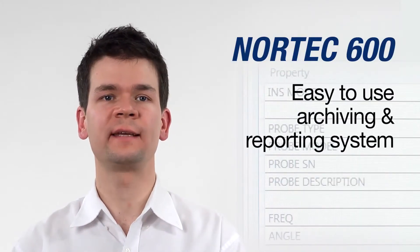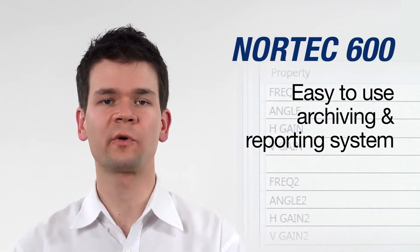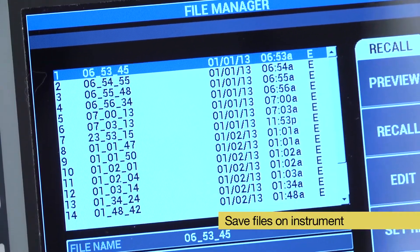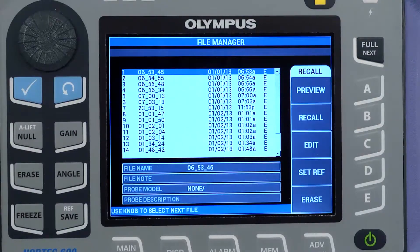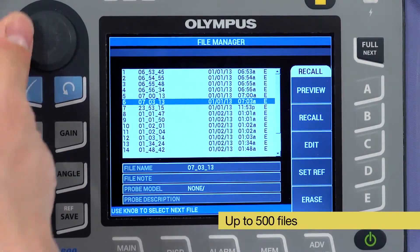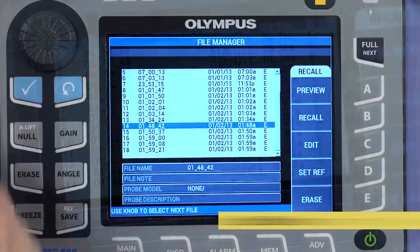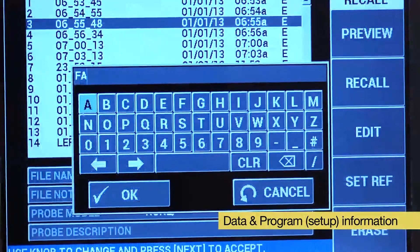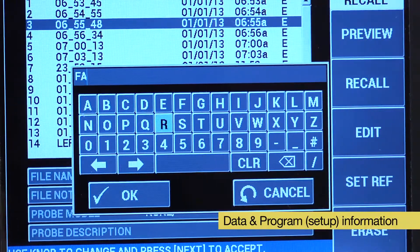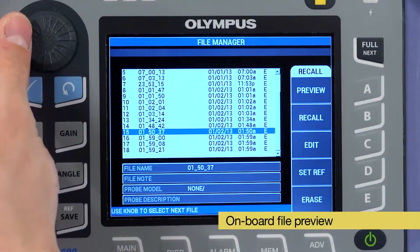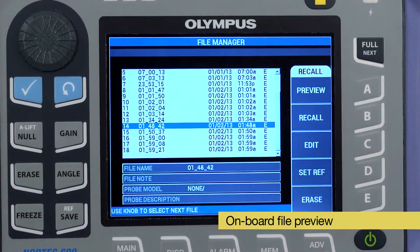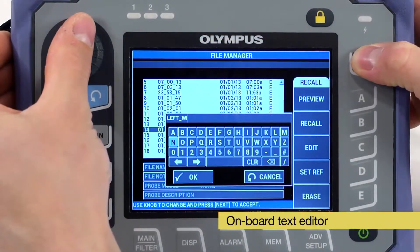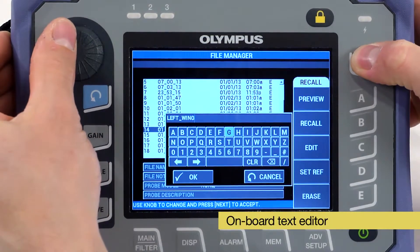The Nortec 600 features an easy to use archiving and reporting system. A single press of the save key instantly creates a file on the instrument. The instrument can store up to 500 files. Each file includes both data information and program or setup information so there is never any disconnect between programs or data files. The Nortec 600 features an onboard file preview before the files are loaded. The onboard text editor also allows renaming files as needed.